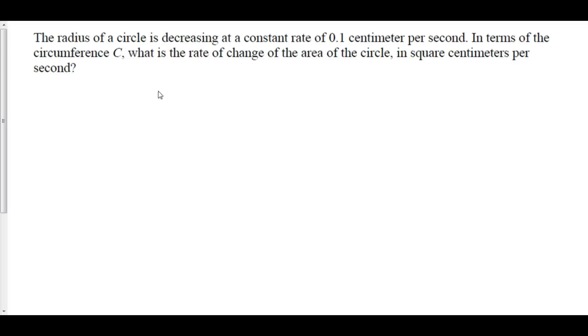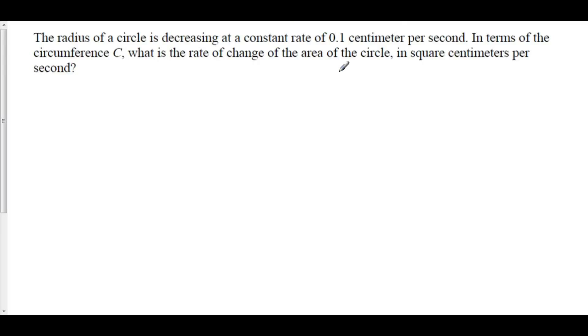This is a related rates problem because we have rates over time. Centimeters per second is a rate. Not only that, but we want to find the rate at which one of our lengths, or some thing — area here — is changing. That is how you know that you have related rates.